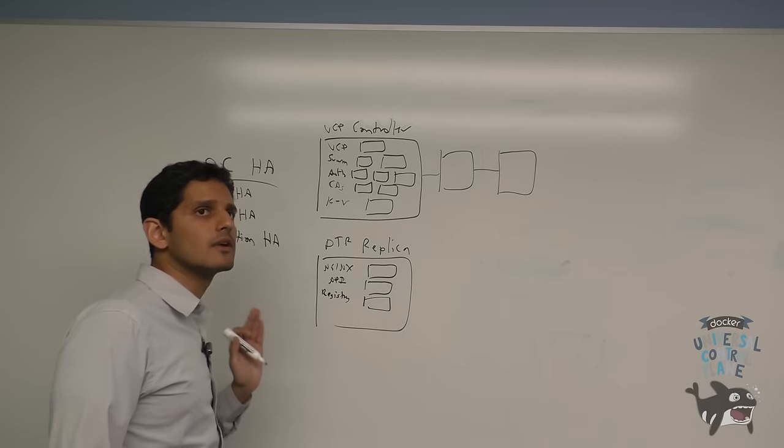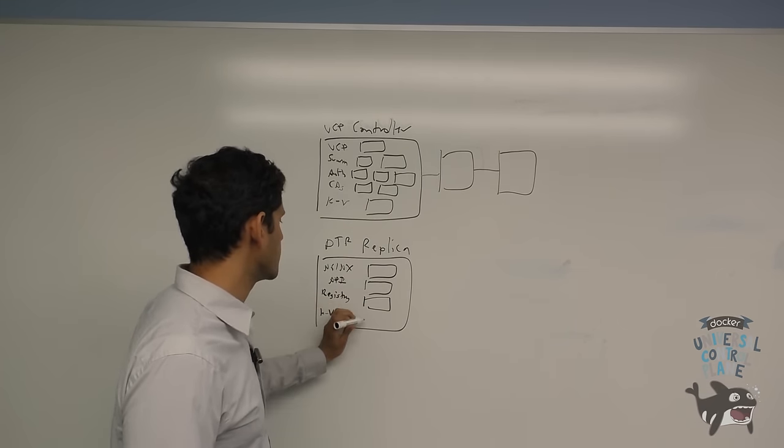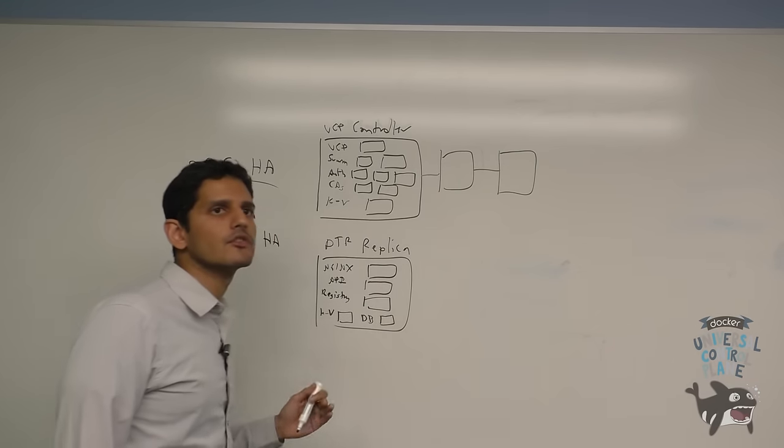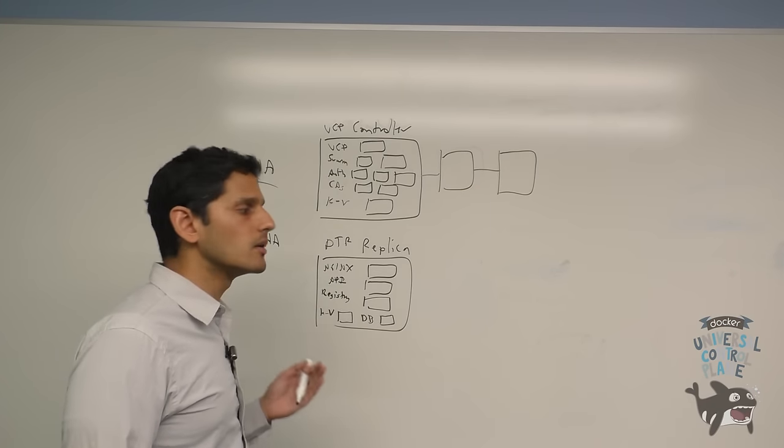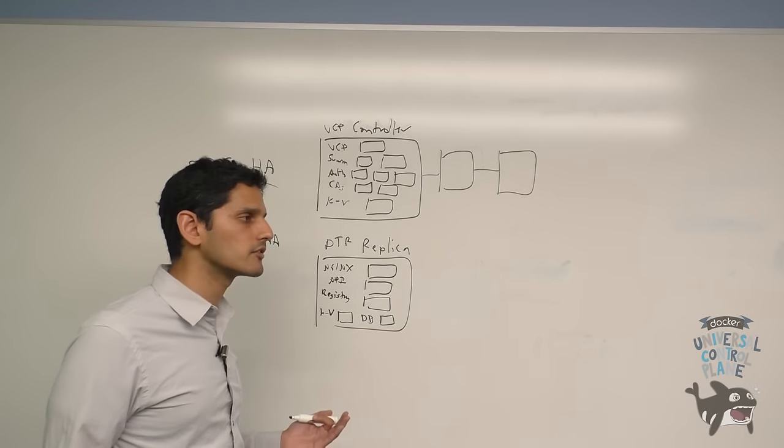For the purposes of replication, there's a key value store, somewhat similar to the key value store in UCP, and there's a database. The key value store stores the configuration for DTR, whereas the database stores the repository and image metadata, things such as image tags or repo tags, for example.